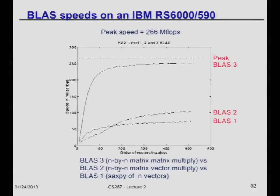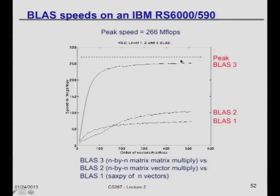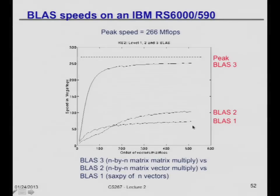Let me show you why it's important to use BLAS 3 when you can, and why BLAS 2 is not as good and BLAS 1 is even worse. Here's some performance data: the horizontal axis is matrix dimension, the vertical axis is speed on this old machine, and the dotted line is the peak at 266 megaflops. The BLAS 3 matrix multiply line reaches well over 90% of peak as the matrix gets big enough. BLAS 2 is much lower, and BLAS 1 is lower still. You'd obviously rather organize your algorithm to spend all its time doing BLAS 3.